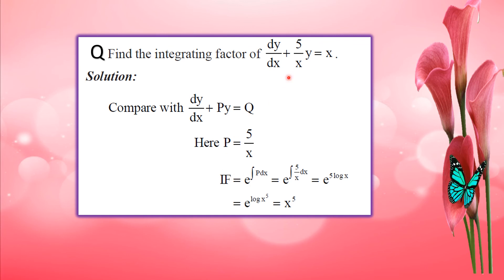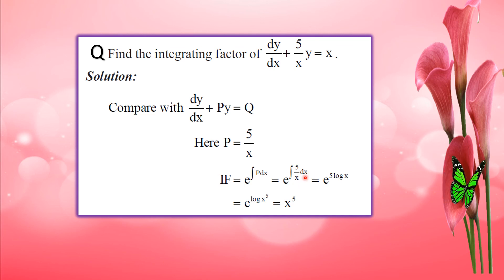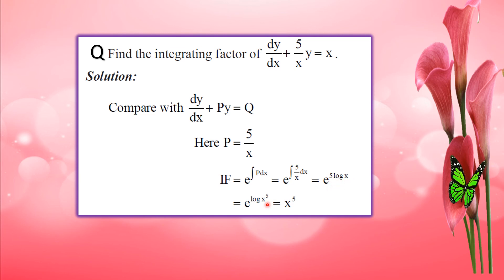The integrating factor is e raised to integral of P dx, which equals e raised to integral of 5 by x dx, giving e raised to 5 log x, which simplifies to x raised to 5.